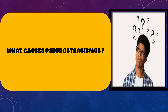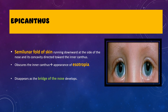The most important cause of Pseudostrabismus is the presence of an epicanthus. An epicanthus is a semi-lunar, crescent-like fold of skin which runs downwards from the side of the nose, covering the inner canthus. As it obscures the inner canthus, the inner sclera of the eye gets obscured and gives an appearance as if the eyes are deviated inwards. Therefore, epicanthus leads to an appearance of esotropia and is a common cause of pseudoesotropia.